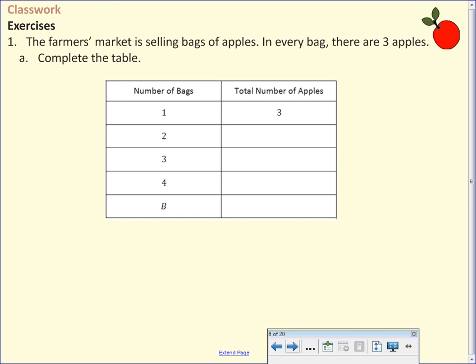Let's take a look at the first exercise. Number one, the farmer's market is selling bags of apples. In every bag, there are three apples. So go ahead and complete that table. They already put the headings on the table for you. They already started filling in the table for you.